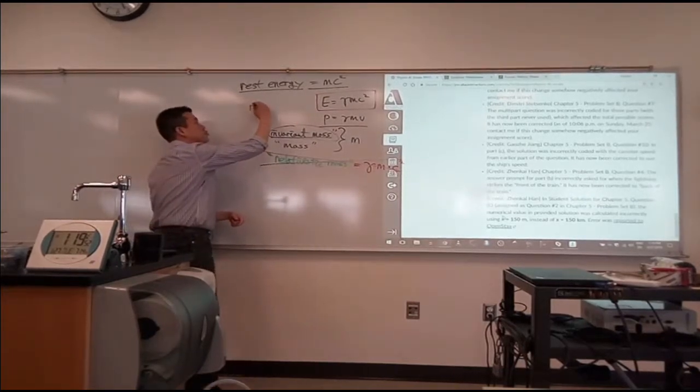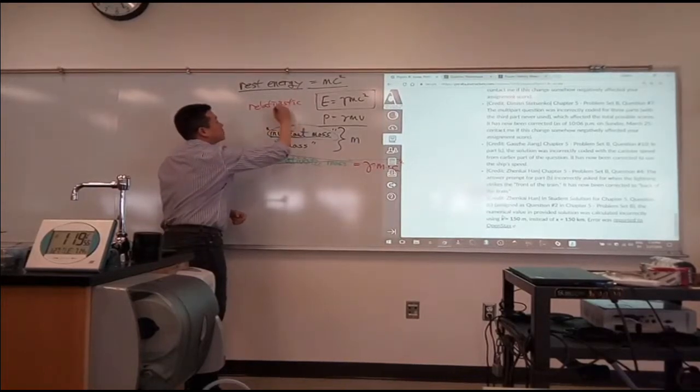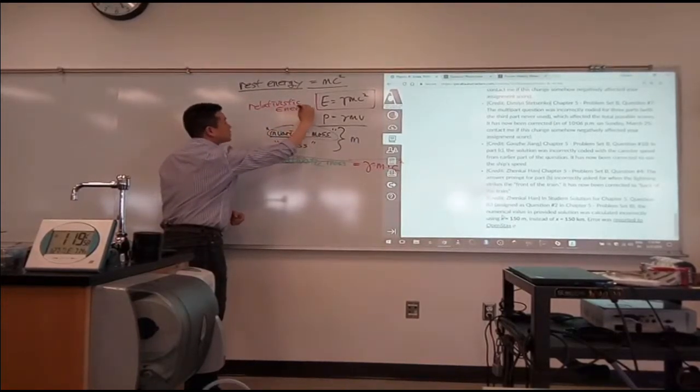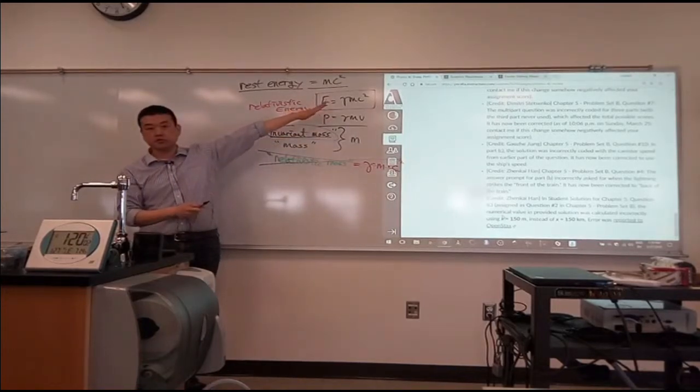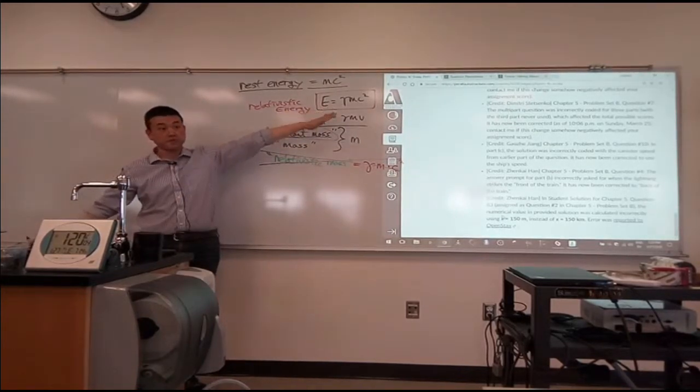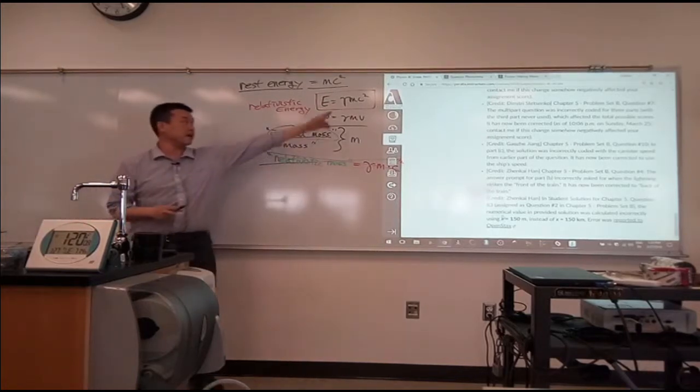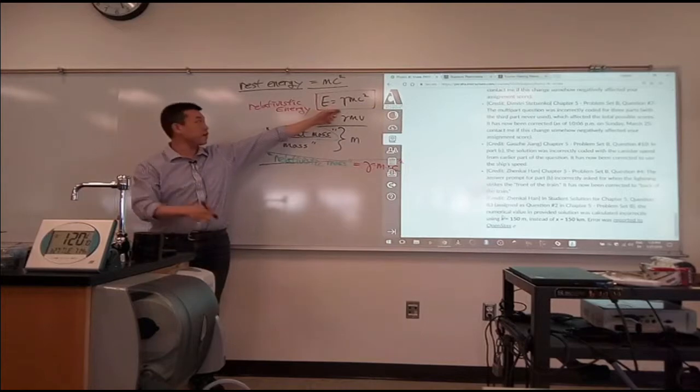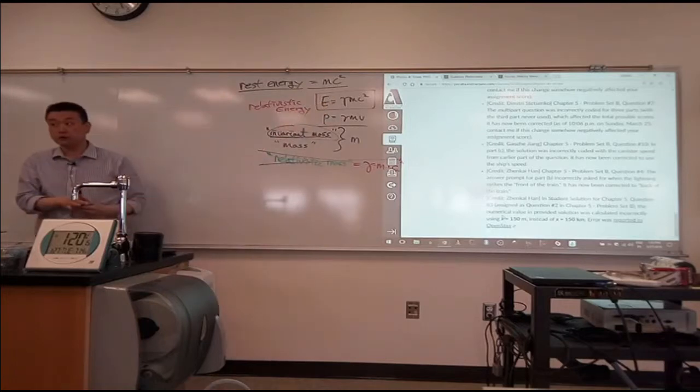So this is what someone should call relativistic energy. This is the conserved quantity. And this is what you should use in all your calculations. Even when you're asked for kinetic energy, the thing you do is you first calculate this, and then you subtract the rest energy to get the kinetic energy. So this is the most fundamental quantity you would work with.